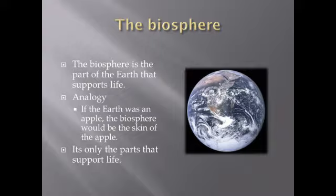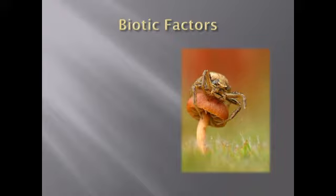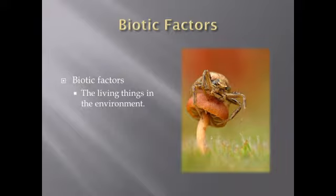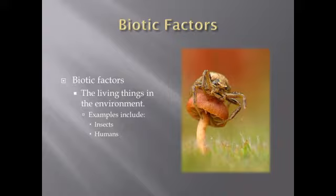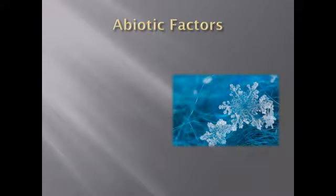When looking at ecology, ecologists study certain parts of the environment. The first are biotic factors — basically the living things in the environment. That includes humans, cats, bacteria, grass, trees — anything that is alive. Insects, humans, cats, and dogs are all biotic factors.